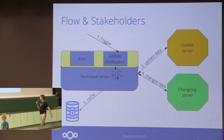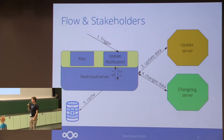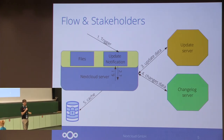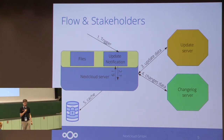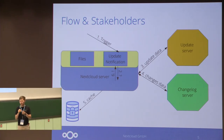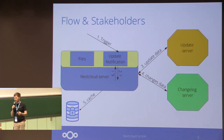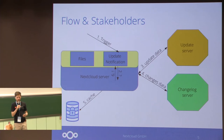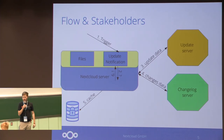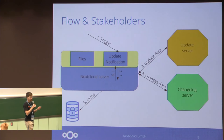On the left big block, that's the Nextcloud server. The ground should display the application layer, and then you have the update notification — that's the trigger for when Nextcloud checks for an update. It happens either via background job or when the admin goes to the settings page.